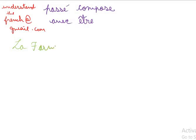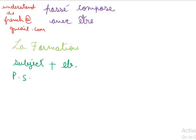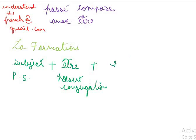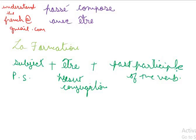Now let's take a look at the formation — la formation. It comprises: number one, the subject, or pronom sujet. If you do not know what pronom sujet is, please take a look at the link in the description box. Then plus être present conjugation, plus the past participle of the verb. If you do not know how to determine the past participle of a verb, please take a look at the link in the description box below.